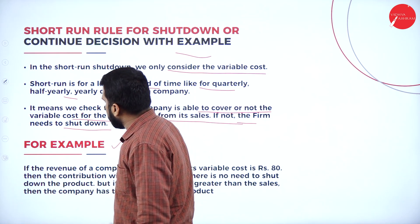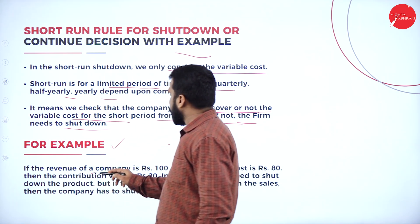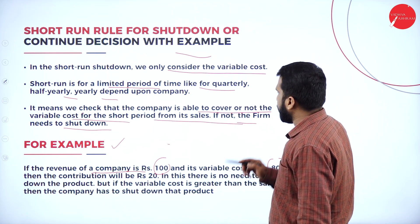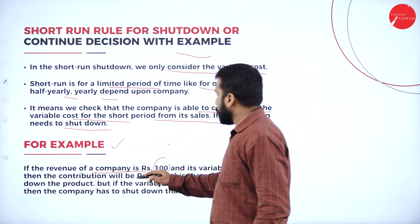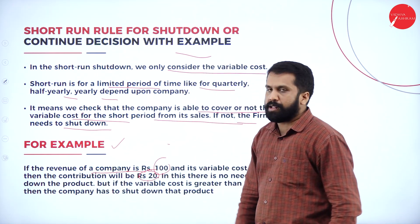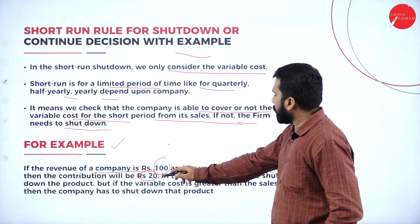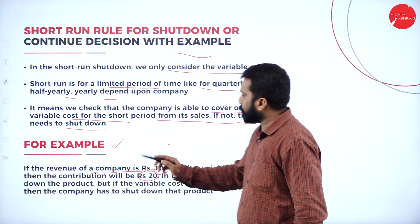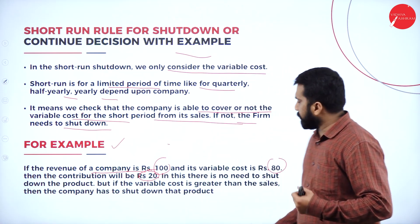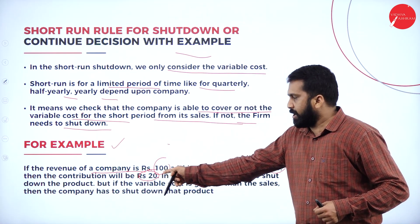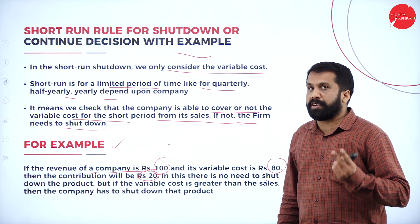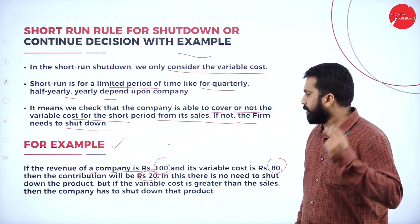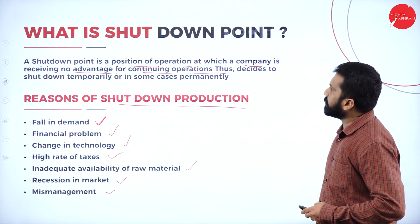For example, if the revenue of a company is ₹100 and its variable cost is ₹80, then the contribution will be ₹20 (100 minus 80). In this case, there is no need of shutdown. Your income is 100, cost is 80, profit is 20 — will you close your company? No, because you are under profit.